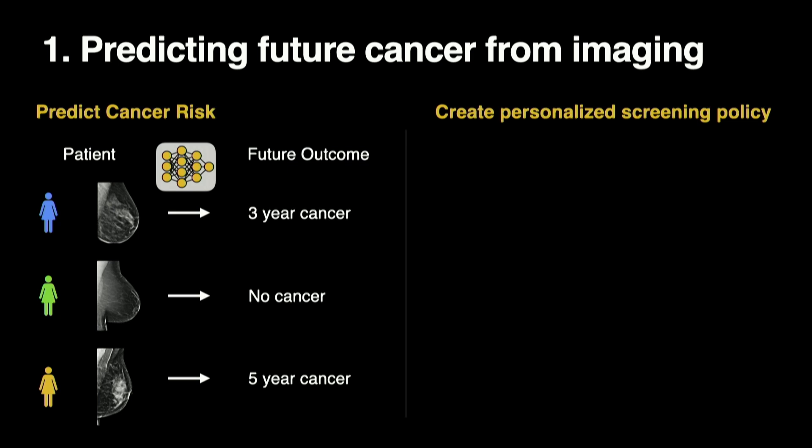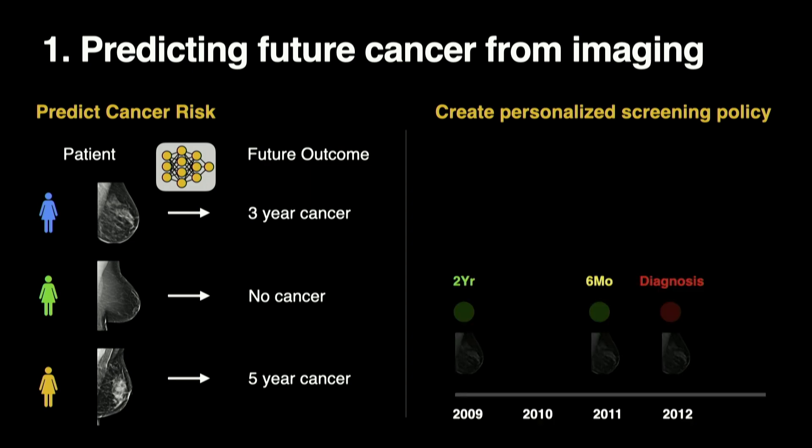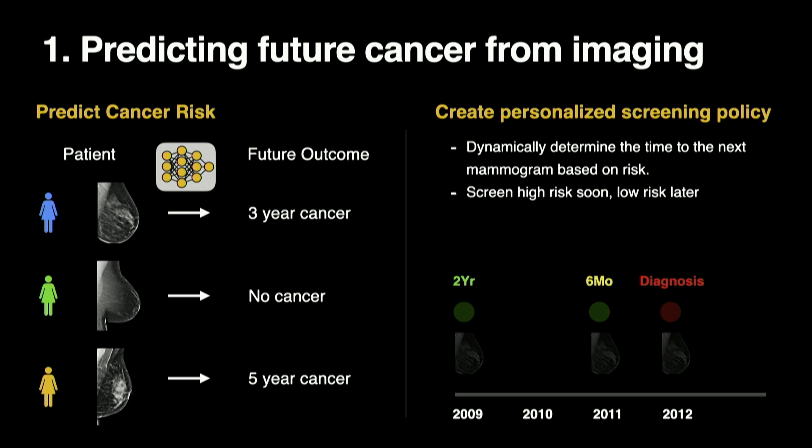What's the point of this? If you do this successfully, you can have something more of a personalized screening regime. Traditionally it's one-size-fits-all — everyone goes in every year. But if you have a model that can do this more intelligently, if you're low risk you can skip a year, and if you're high risk you should probably come in earlier. So now you have a dynamic way of screening people for cancer that depends on your risk and is also more efficient in terms of the benefits and harms of screening.